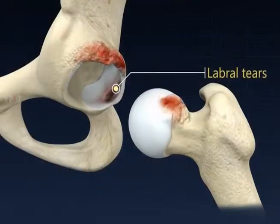The labrum is a ring of cartilage that goes around the rim of the hip socket. If we think of the hip as a ball fitting into a socket, the labrum is a gasket seal that goes around the rim of the socket. It's there to stabilize and protect the hip and the other cartilage in the hip. When it tears, it sometimes causes pain that we can treat with arthroscopic surgery.